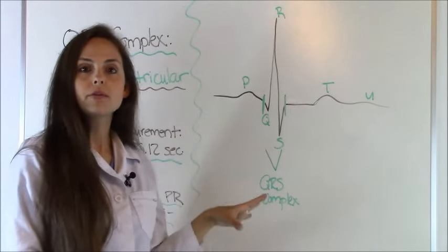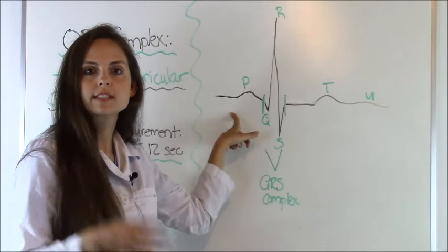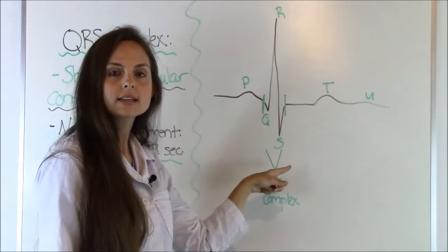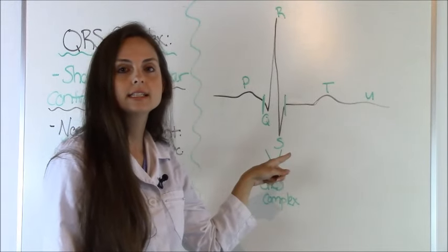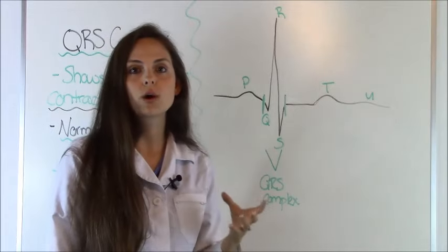Here is one that I've drawn that is blown up so you can see it easier. You have your P wave, which represents atrial contraction. Then you have your QRS complex. This is what we're looking at today. This is our ventricular depolarization. Depolarization is just a fancy word for contraction.